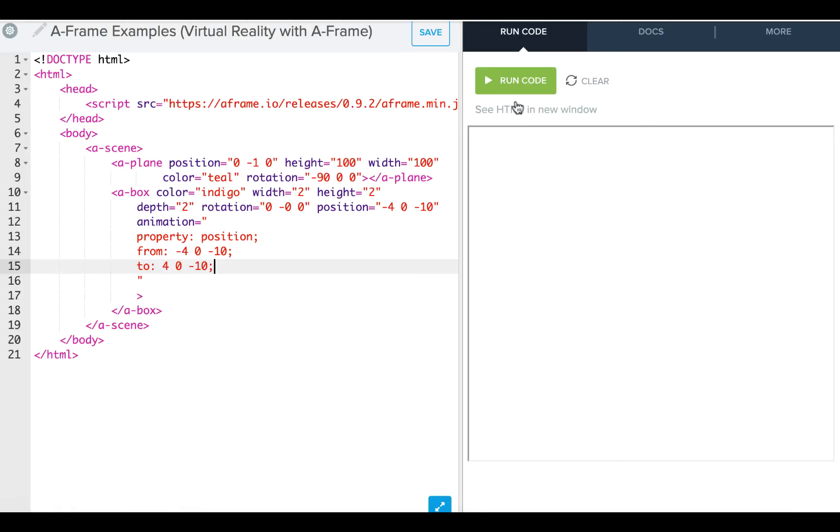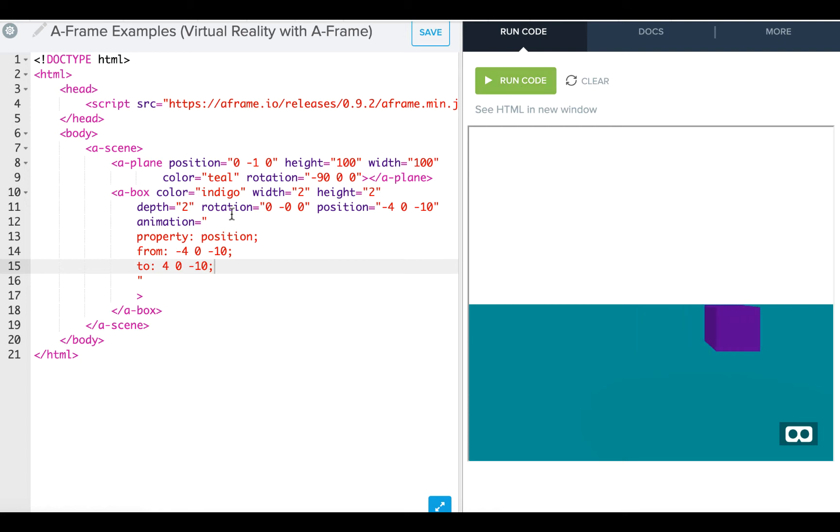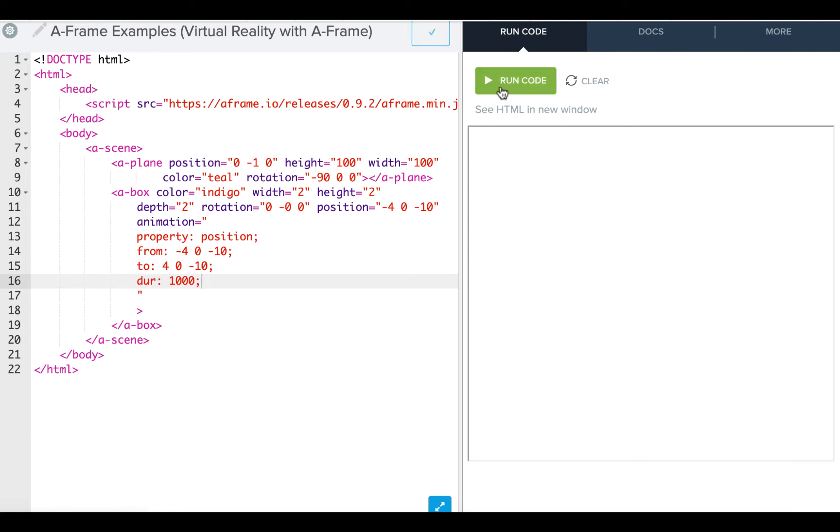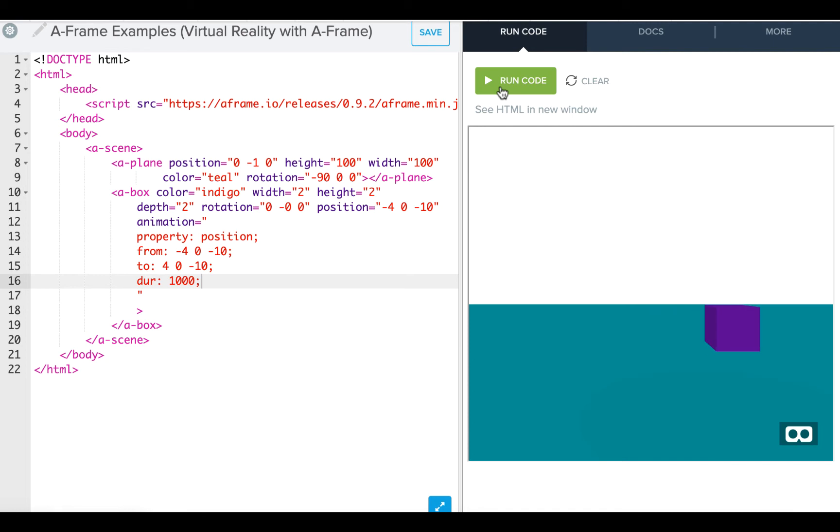Let's take a look at duration in the editor. If I run now with no duration, my block takes one second to travel over there. If I go in and specify duration equal to 1000, that's 1000 milliseconds. I really don't see a change here. It still takes that same one second.